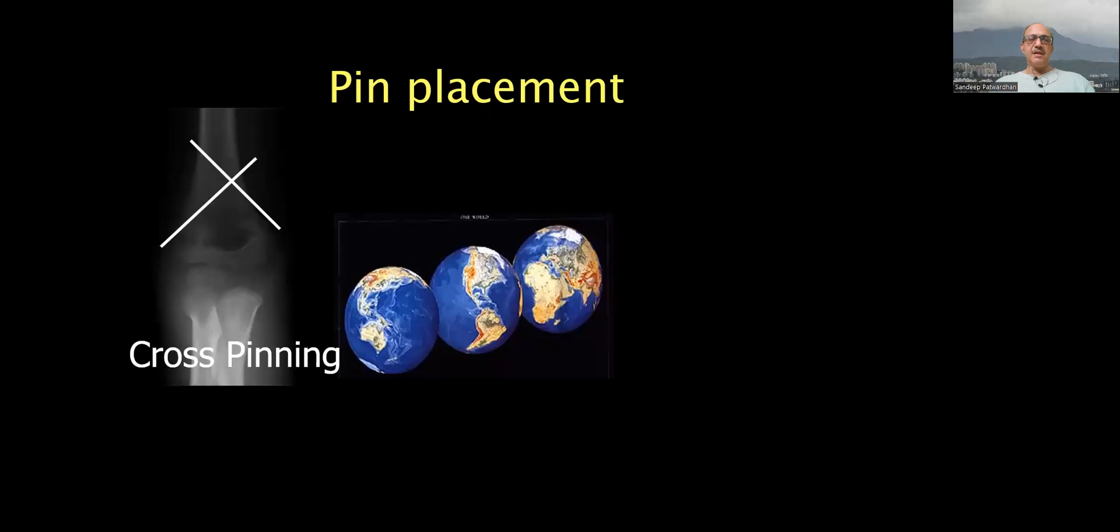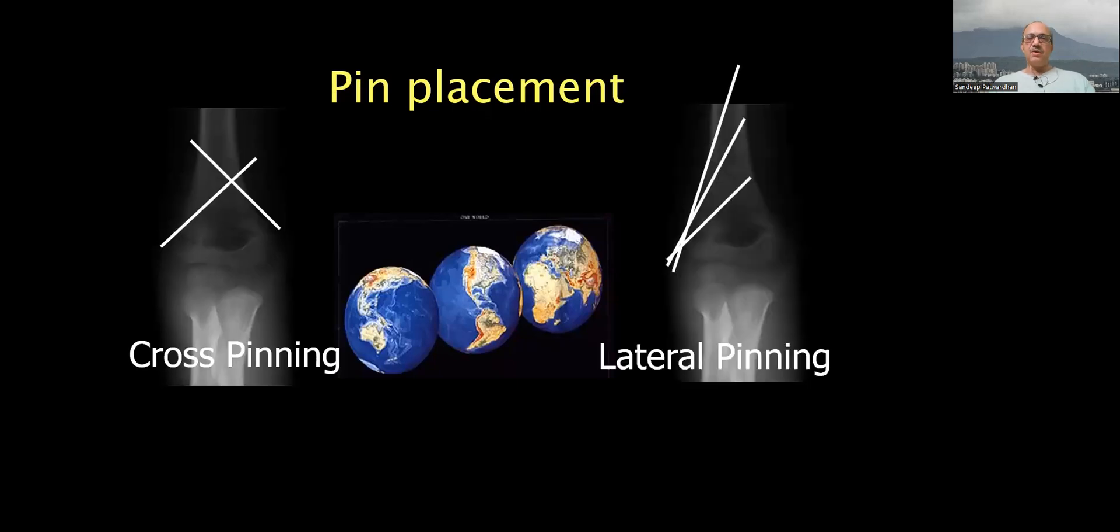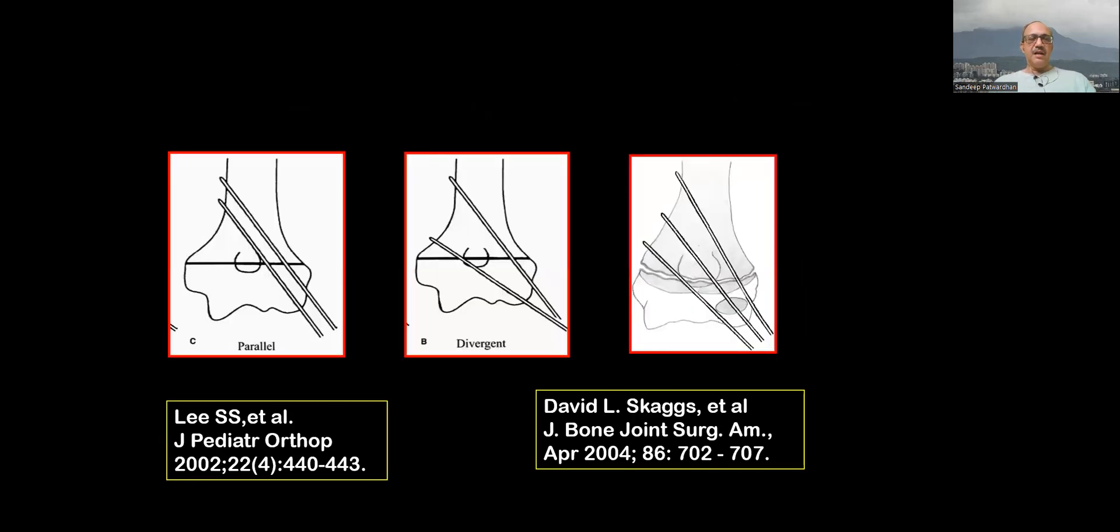Pinning - pin placement has varied from cross pinning to lateral pinning and nowadays we prefer lateral pinning to avoid ulnar nerve complications. This is safer and the configuration has moved from only two lateral pillar pins to divergent pins where one you have a four cortex pin to unstable situations where you can use three lateral pins.